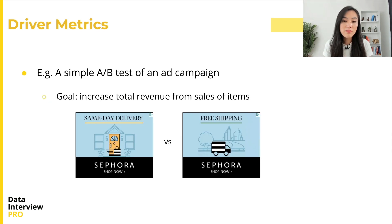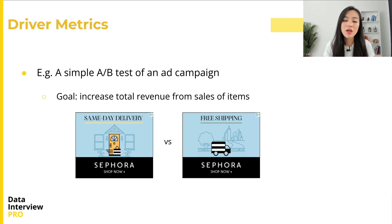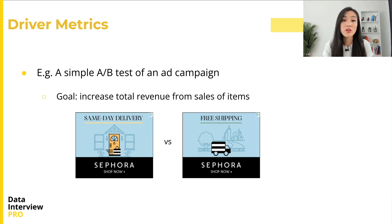Let's consider a simple A/B test of an ad campaign. The difference between the ad in the control and treatment group is its design. The goal of the ad campaign is to increase total revenue from sales of items. But given the goal of the campaign, how do we select which metrics are best for the situation? Conversely, which metrics are bad?